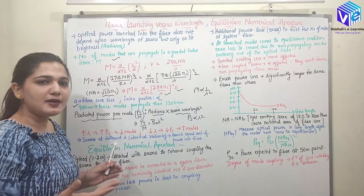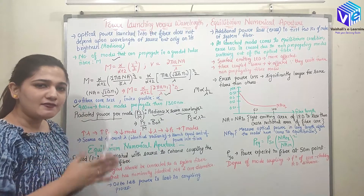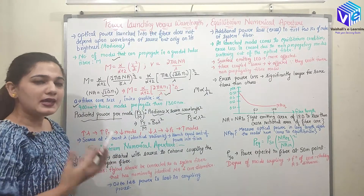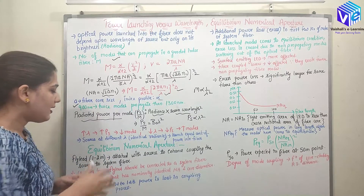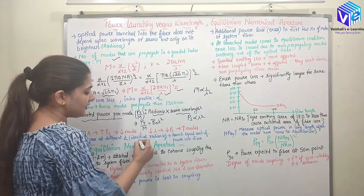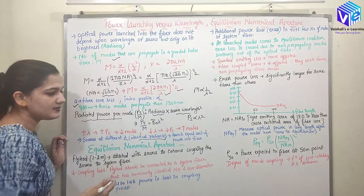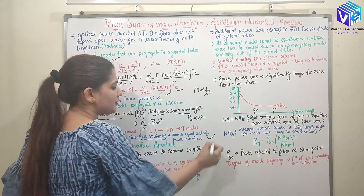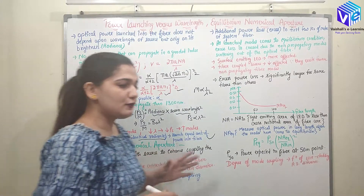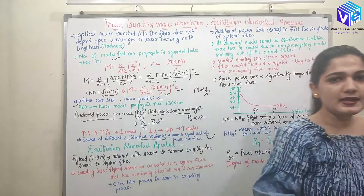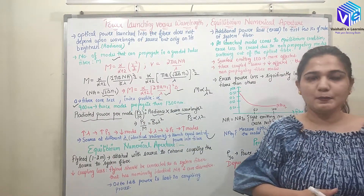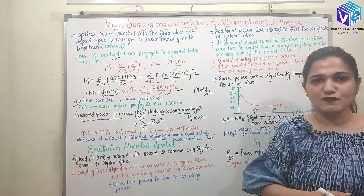For larger λ there are fewer modes, so the power per unit mode stays balanced. Sources at different wavelengths but with identical radiance will launch equal amounts of power inside the fiber. This proves that the power launched inside the fiber does not depend upon the wavelength of the light used.